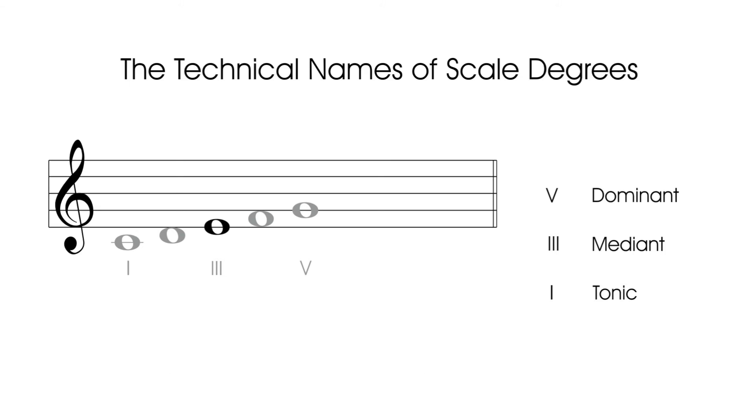The next two notes are similarly identified, but by counting down from the tonic. Counting down five, on the fourth degree, we have the sub-dominant note.